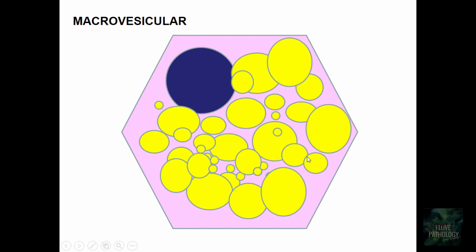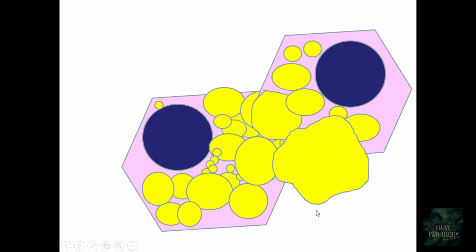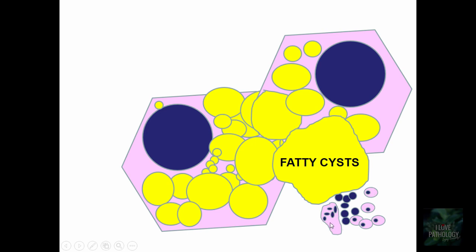When the same thing happens in all hepatocytes, the macro vesicles can fuse together and form fatty cysts. These fatty cysts are formed by the fusion of many macro vesicles. Sometimes these fatty cysts can rupture and elicit an intense granulomatous response — accumulation of lymphocytes, few macrophages, and multinucleated giant cells. So the microscopic features are: microvesicles initially, then macrovesicular change, then fatty cysts, and finally a granulomatous response.